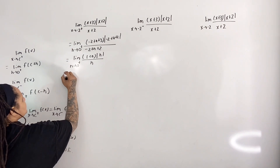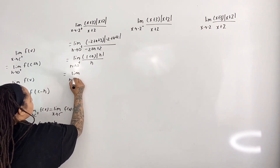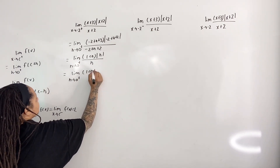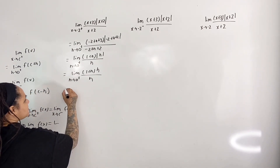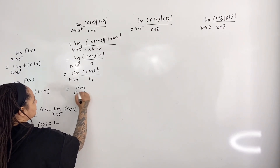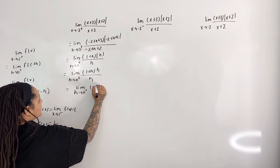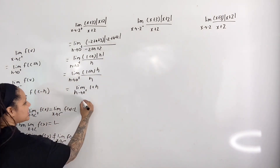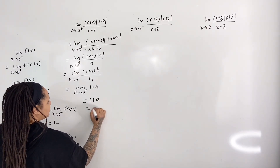Since h approaches 0 from the right, h is positive, so the absolute value of h equals h. This gives the limit as h approaches 0 from the right of (1 plus h) times h all over h. We get a cancellation, leaving the limit as h approaches 0 from the right of 1 plus h. Plugging in 0, we get 1 plus 0, which equals 1.